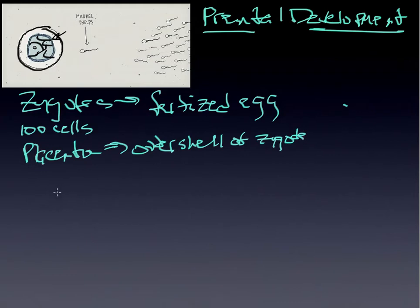The inner cells are what we would refer to as the embryo. So that differentiation already begins to occur at the moment of fertilization itself.